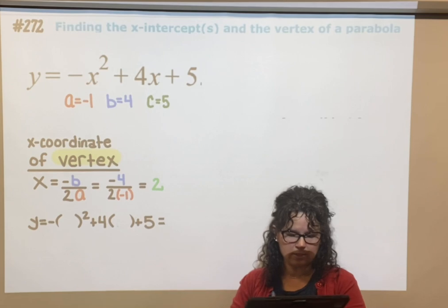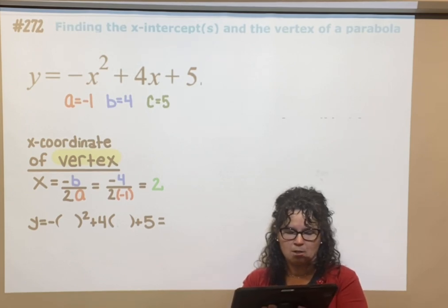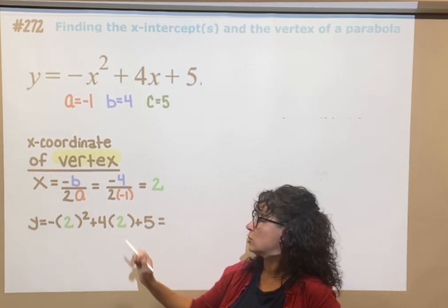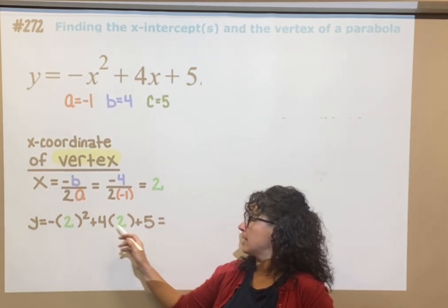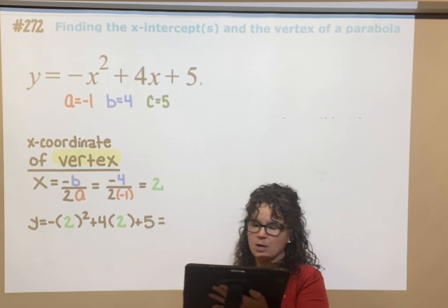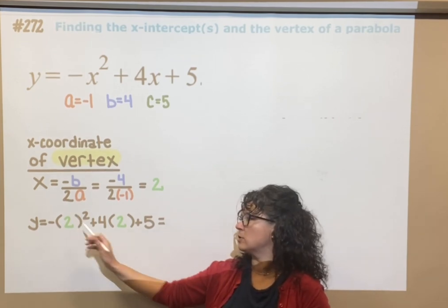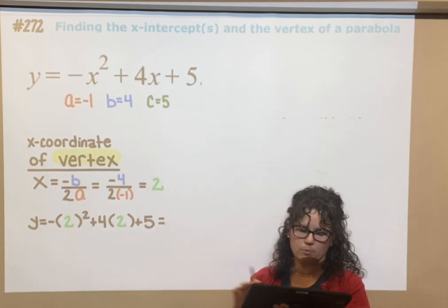You do not have to use order of operations here. So I'm putting in 2. And then when I type that across, this is like negative 1 times 2 times 2 plus 4 times 2 plus 5. I end up getting 9.